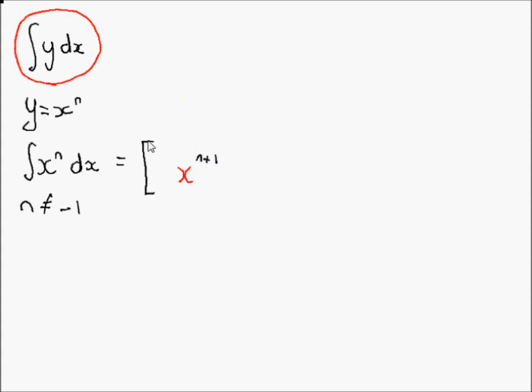So, in integration, you add 1 to the power. And then you multiply this x to the power of n plus 1 by 1 over n plus 1.